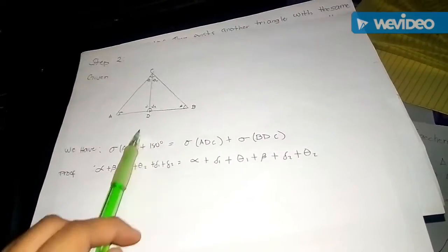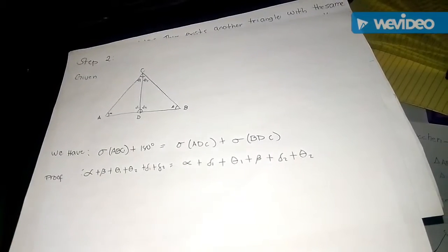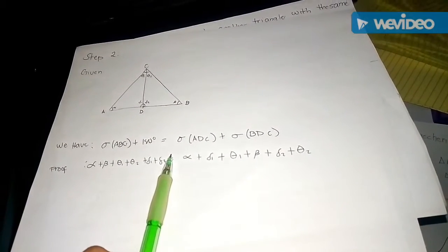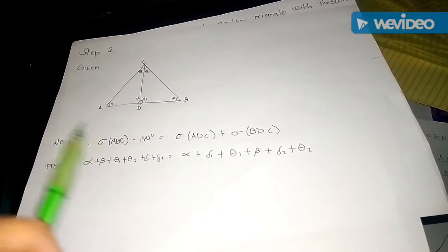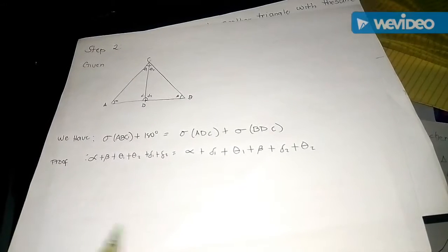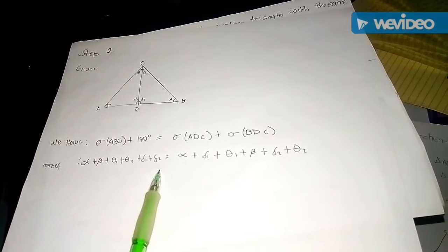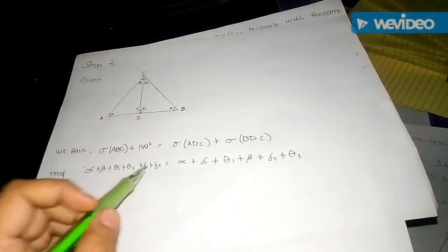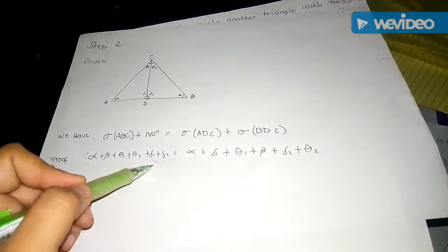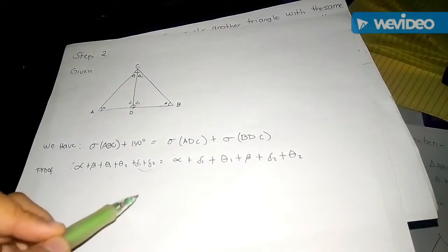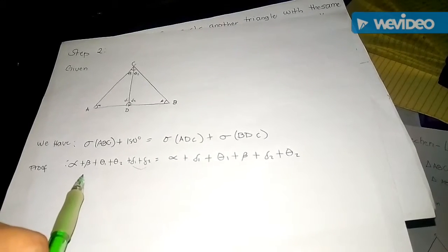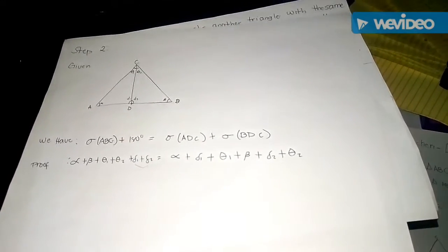The proof is strictly algebraic. Label the angles of ADC as α, δ₁, and θ₁, and the angles of BDC as β, δ₂, and θ₂. We write out the angle sums on the right-hand side. By rearranging, and using the linear pair theorem, δ₁ and δ₂ add up to 180 degrees. The remaining angles correspond to the angle sum of triangle ABC, completing the proof of Step 2.